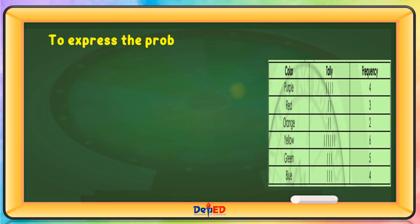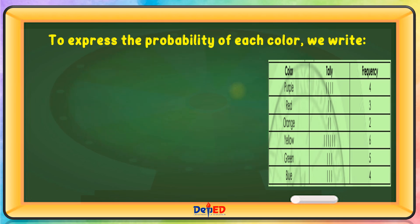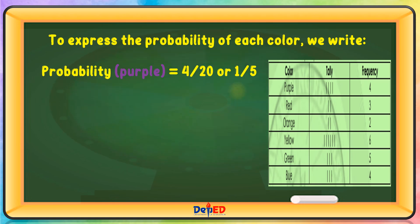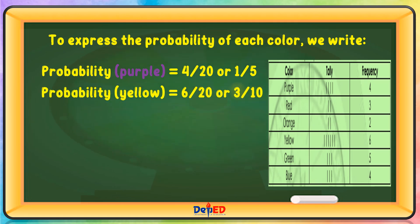To express the probability of each color, we write: Probability of purple equals 4 over 20, or 1 fifth. Probability of yellow equals 6 over 20, or 3 tenths.